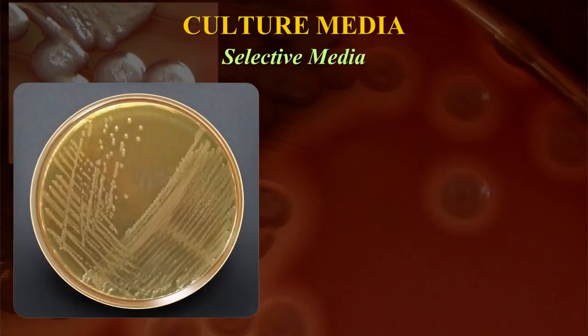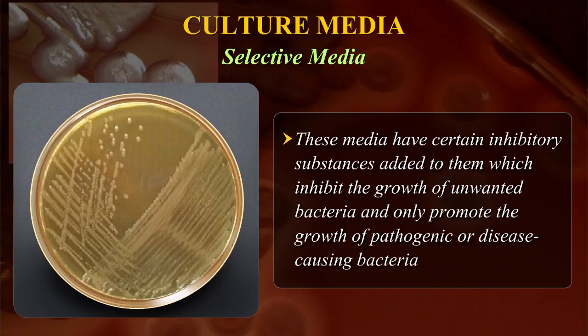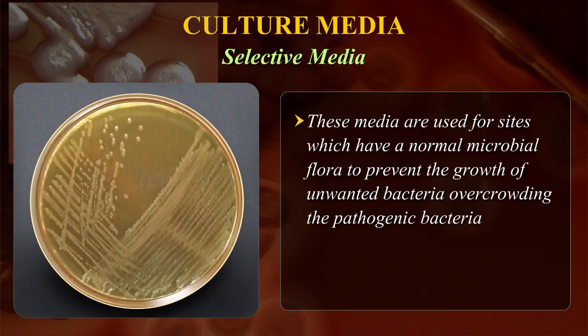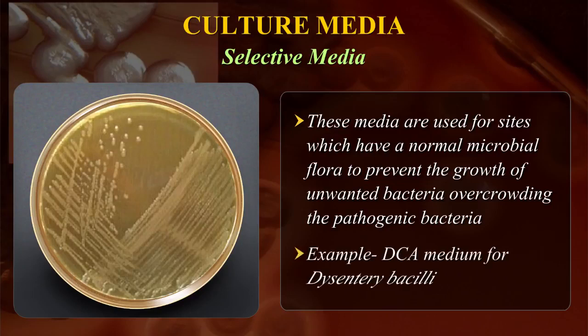Selective media have certain inhibitory substances added to them which inhibit the growth of unwanted bacteria and only promote the growth of pathogenic or disease-causing bacteria. These media are used for sites which have a normal microbial flora, to prevent the growth of unwanted bacteria overcrowding the pathogenic bacteria. An example is DCA medium for dysentery bacilli.